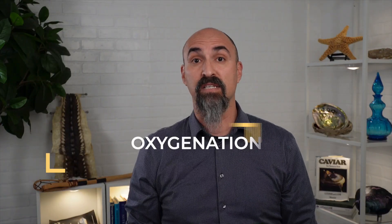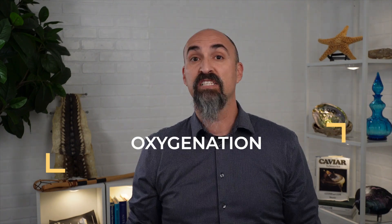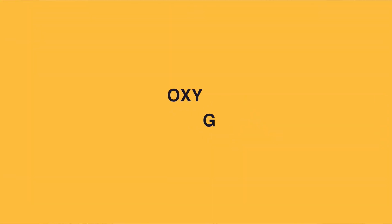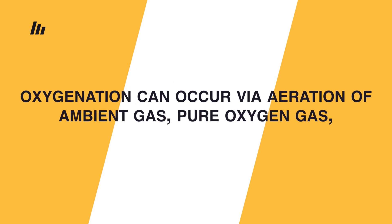The last RAS process to discuss is oxygenation — the addition of dissolved oxygen to the water. Oxygen is not just important for your fish health; it's also important for those aerobic bacteria in your biofilter. It is not uncommon for oxygenation, like gas stripping, to also occur at different RAS processes. Oxygenation can occur via the aeration of ambient gases, pure oxygen gas, and for some commercial aquaculture growers, in the form of liquid oxygen.